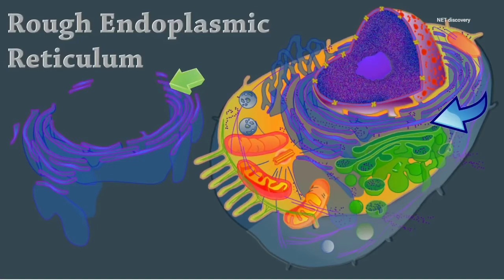Sugar groups are attached to proteins within the cisternae. These proteins are bound in vesicles for transport to the Golgi apparatus and other sites. The external face synthesizes phospholipids and cholesterol.